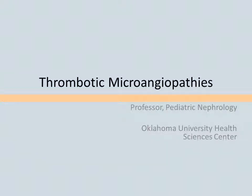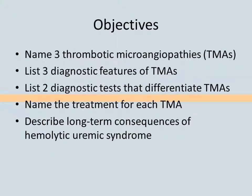Thrombotic microangiopathies, or TMAs, are syndromes of disordered coagulation that have profound systemic effects. After this presentation, you should be able to name three TMAs, list three diagnostic features of TMAs, list two diagnostic tests that differentiate TMAs, name the treatment for each TMA, and describe the long-term consequences of HUS.